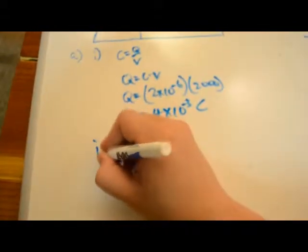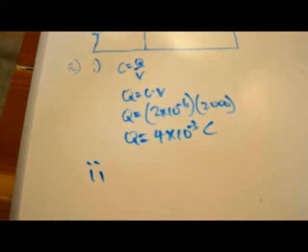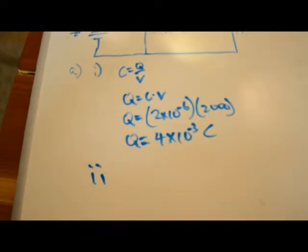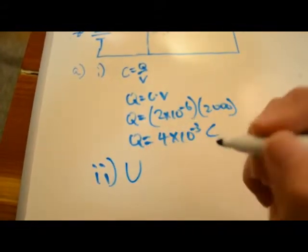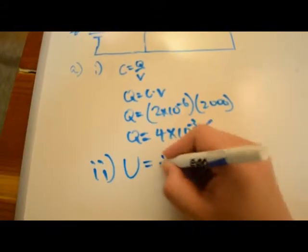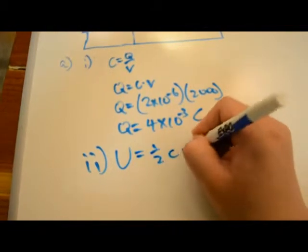In part 2, they ask for the electrical energy stored within the capacitor. We can use the equation for potential energy within the capacitor: U equals one half C V squared.